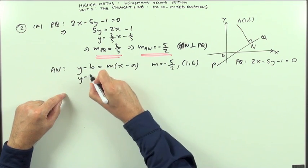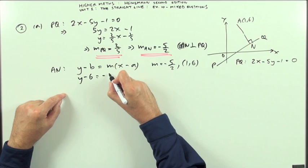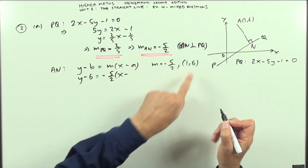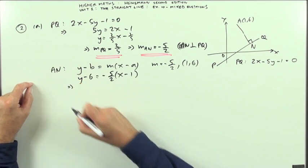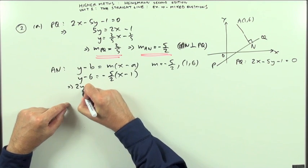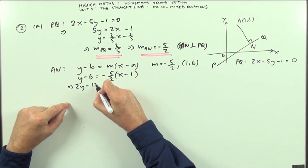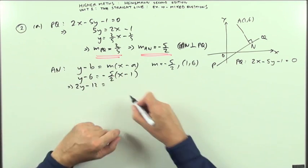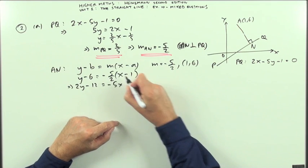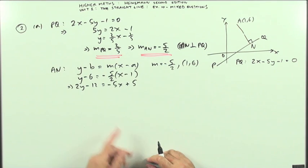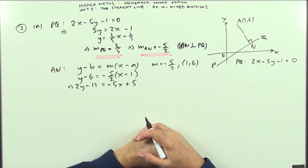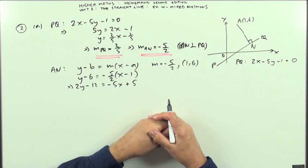y minus the y coordinate is the gradient, negative 5 over 2, times x minus the x coordinate. Multiply by the fraction. So I've got 2y minus 12. Leave the negative on this side. So it'll be negative 5x plus 5. And then rearrange it according to your taste or according to whatever you want to do with it later.